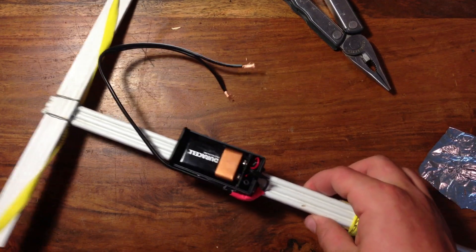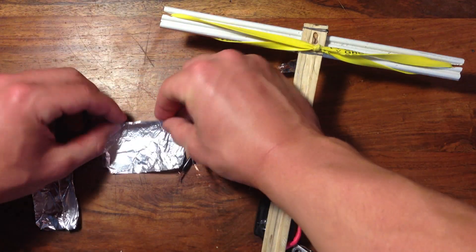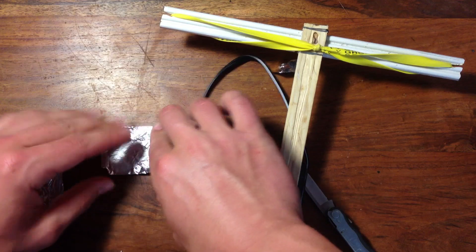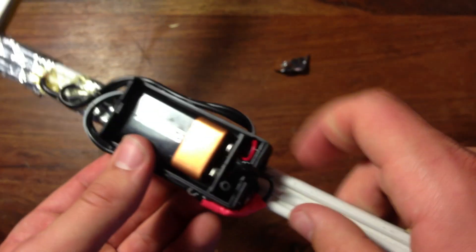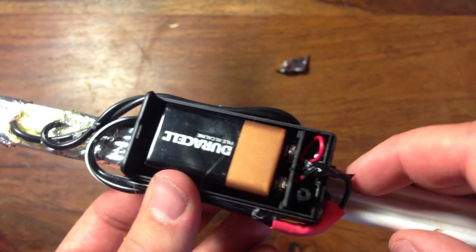Now take your battery clip and glue it to the bottom of the crossbow. Then take two pieces of tin foil and attach the positive wire coming from the battery clip to one piece of tin foil and the negative to another.